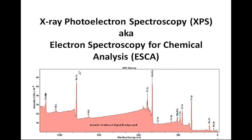An XPS spectrum is an energy spectrum, and the energy spectrum is acquired by changing the energy at which we sample the number of electrons that arrive at a detector. As a consequence of these types of measurements, we can create a histogram of intensity as a function of energy.